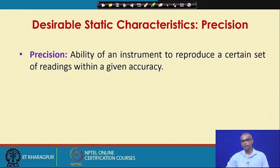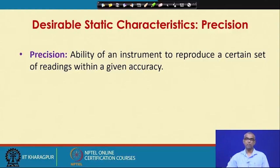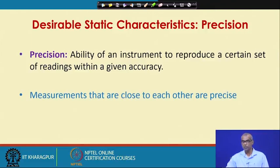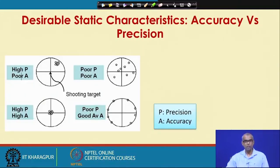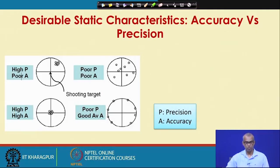Next, let us talk about precision. Precision is the ability of an instrument to reproduce a certain set of readings within a given accuracy — that is, how closely several readings of the same measurement agree with each other. Measurements that are close to each other are precise. Accuracy is defined as the closeness of the measured value to the true value, whereas precision is the agreement among the measurements themselves.